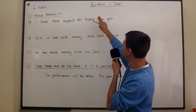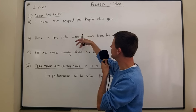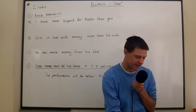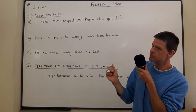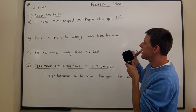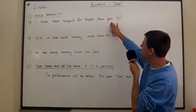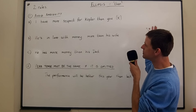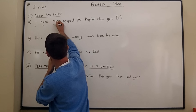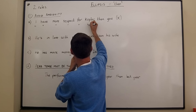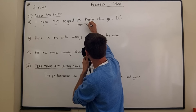It could mean 'I have more respect for Kepler than I have respect for you,' or it could mean 'I have more respect for Kepler than you have respect for Kepler.' It's really not clear on its own — whether I'm comparing Kepler and you and the amount of respect I have for both of you, or comparing the amount of respect I have for Kepler with the amount you have for Kepler. How do we make ourselves clear? Basically, we don't use this sentence — it's considered wrong.